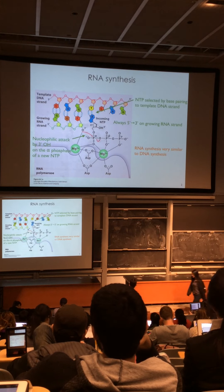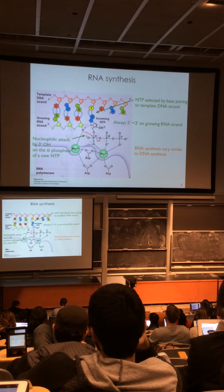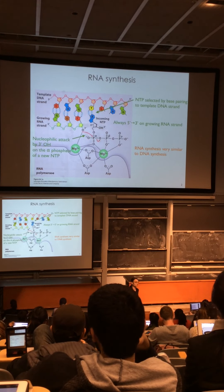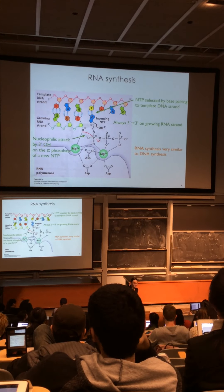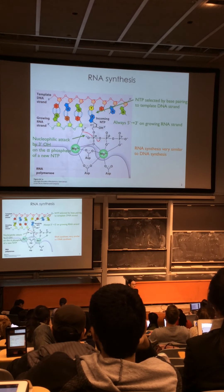Like DNA synthesis, RNA is always synthesized 5' to 3'. There's a chemical logic to this: the 3'OH needs to attack the 5' phosphate. The NTP is selected by base pairing with the DNA strand—that's how information in DNA is copied into RNA sequence, exactly complementary to the DNA sequence being used.